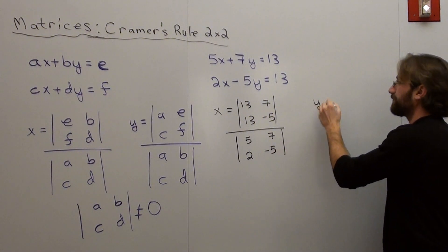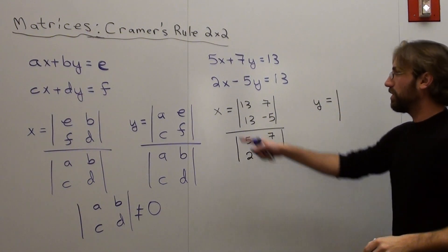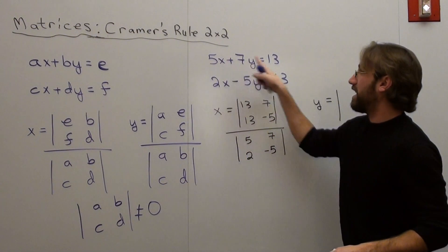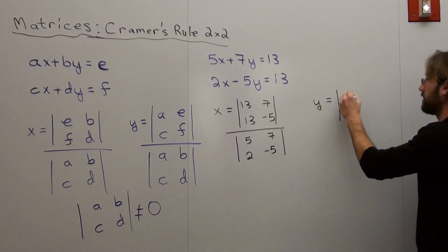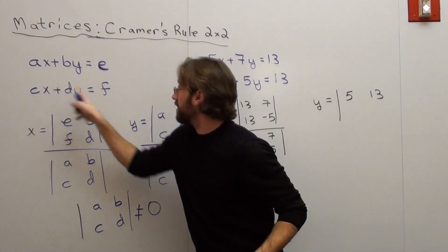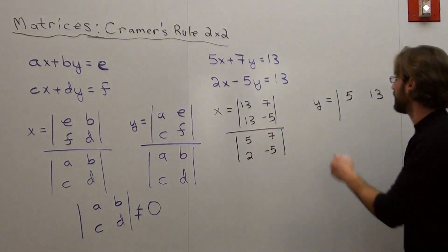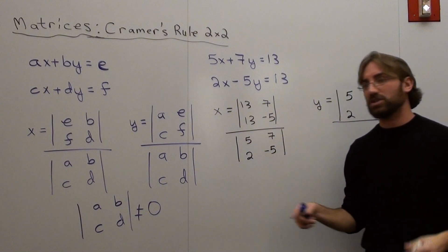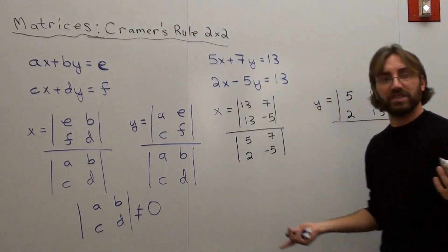And my y value is going to be equal to a, e, c, f. So that's going to be 5, 13, and then it's going to be c and f. c and f are these two, which are 2 and 13, and then it's just going to be over the same determinant as the first one, which is 5, 7, 2, negative 5.